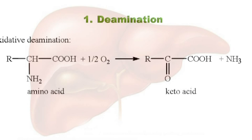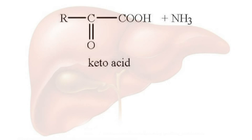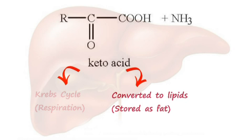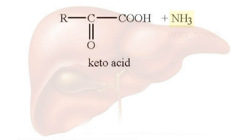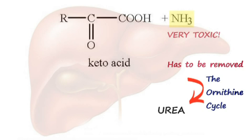In deamination, the amino group is removed and the amino acid is oxidized as it reacts with oxygen. This produces a keto acid and ammonia. Since the keto acid is stable, it either enters the Krebs cycle and is respired, or it's converted to lipids and cholesterol and therefore stored as fat. The ammonia, however, is very toxic and also very soluble, so it has to be removed. At this point, it is immediately converted to urea via the ornithine cycle.